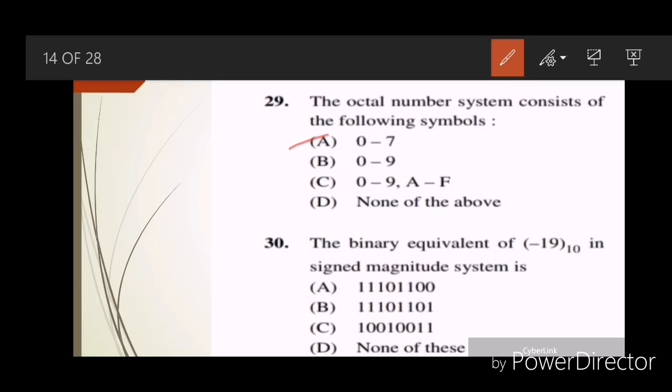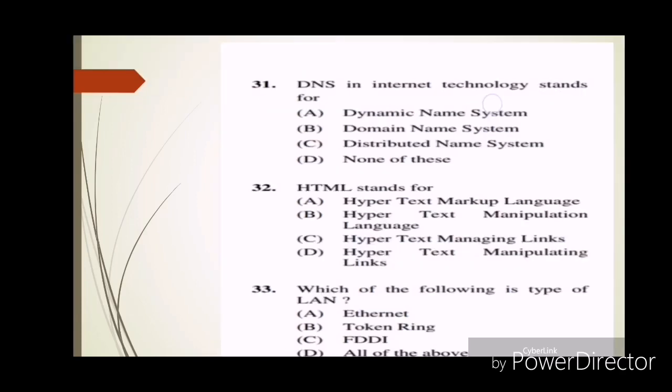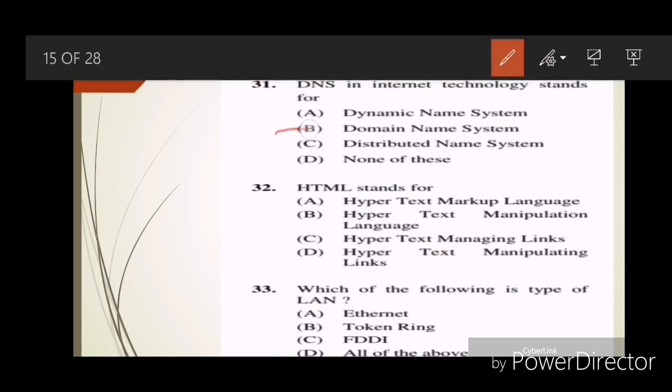Question thirty-one: DNS in internet technology stands for? Answer B, Domain Name System. Question thirty-two: HTML stands for? Answer is A, Hypertext Markup Language. Question thirty-three: Which of the following is a type of LAN? Answer is A, Ethernet.